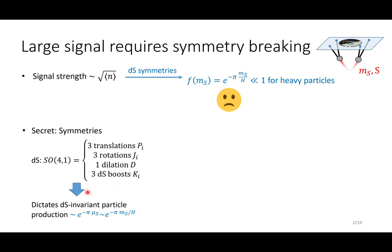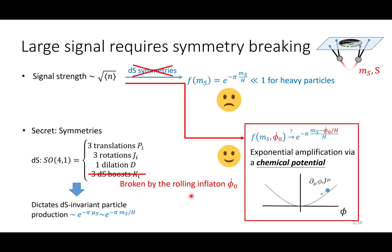But let us remember that inflation is not in fact a de Sitter space. In particular, the de Sitter boosts will be broken by the rolling inflaton field. So that motivates us to look at the symmetry breaking case where these signal strengths can be greatly alleviated by the introduction of a concept called the chemical potential.